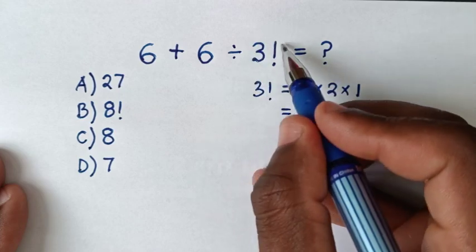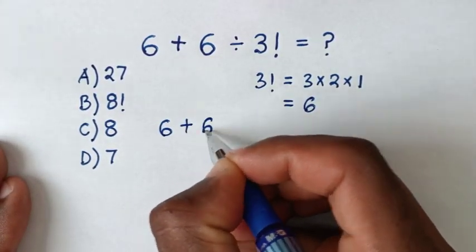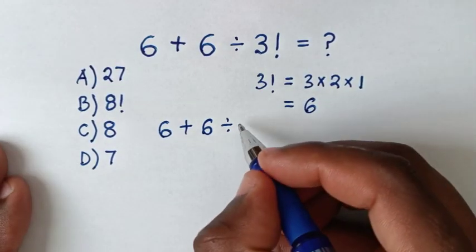So into here we'll substitute 6. Then our problem will be 6 plus 6 divided by 3 factorial which is 6.